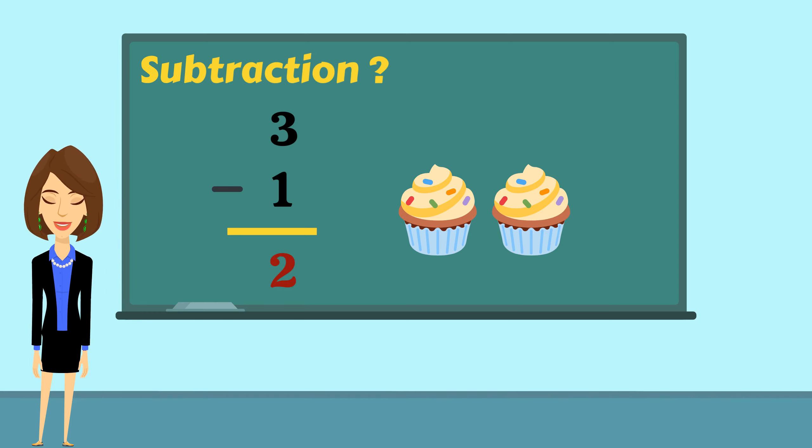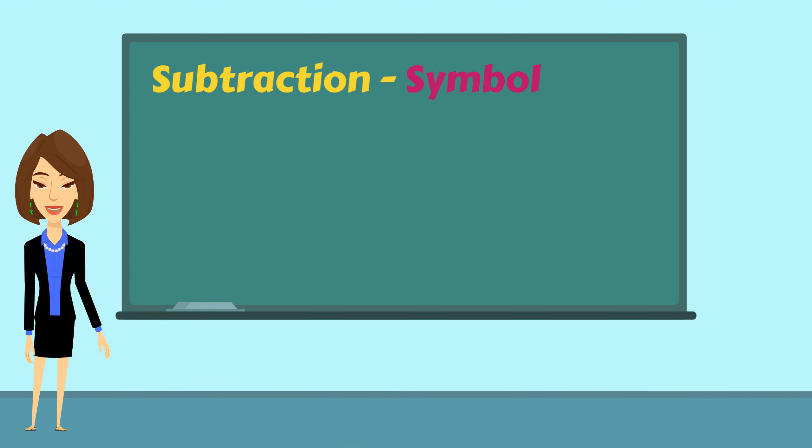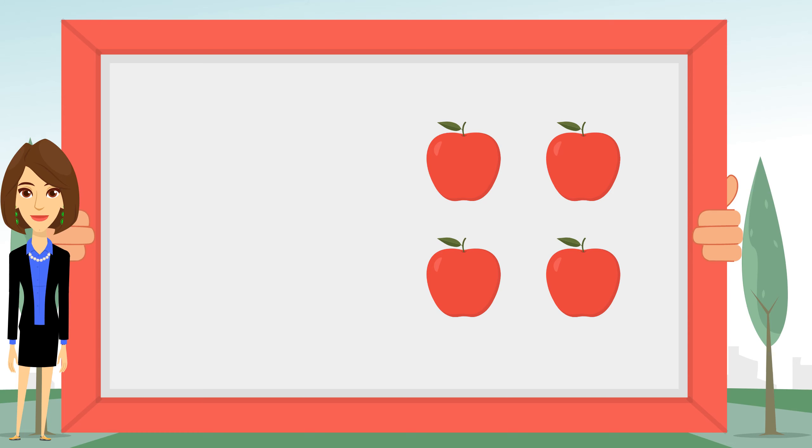Here we have four apples. If you eat one, how many apples would remain? Taking away one from four will give you three.